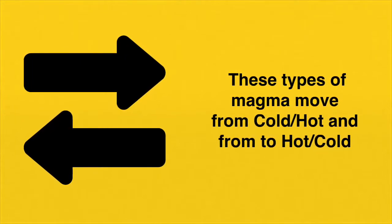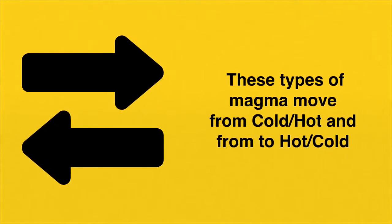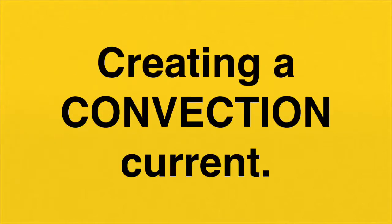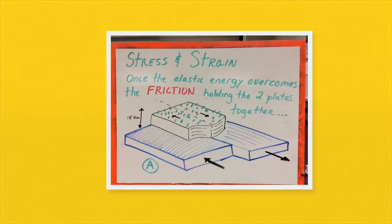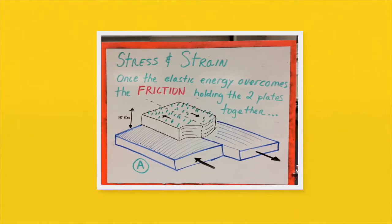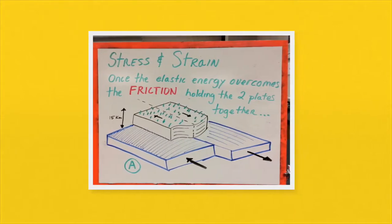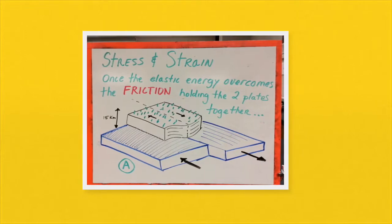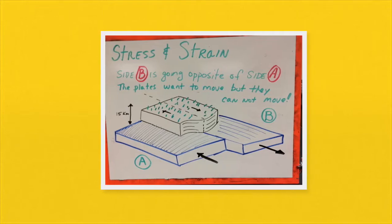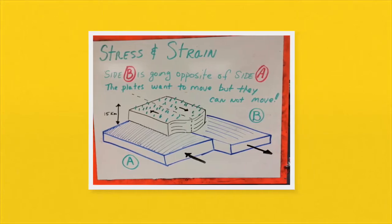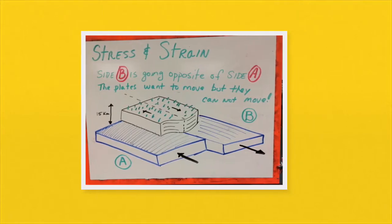These types of magma move from cold to hot and from hot to cold. The movement of magma begins to create a convection current. The convection current causes one plate to move against another. There is a buildup of elastic energy, and eventually that overcomes the friction holding the two plates together. The two plates want to move, but they can't. But eventually, the energy overcomes the other, and boom, an earthquake.